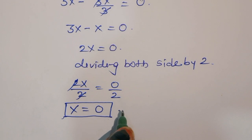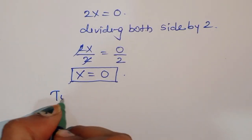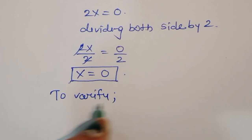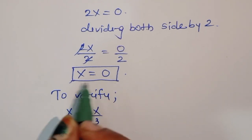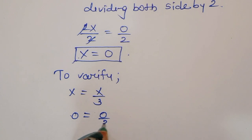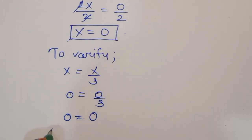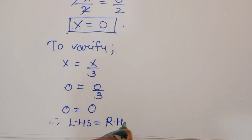This is the value of x. Now to verify, let's check this value. We will get x is equal to x/3, this is the equation. x is 0, so 0 equals 0/3, which is 0 equals 0. Therefore we can say LHS is equal to RHS.